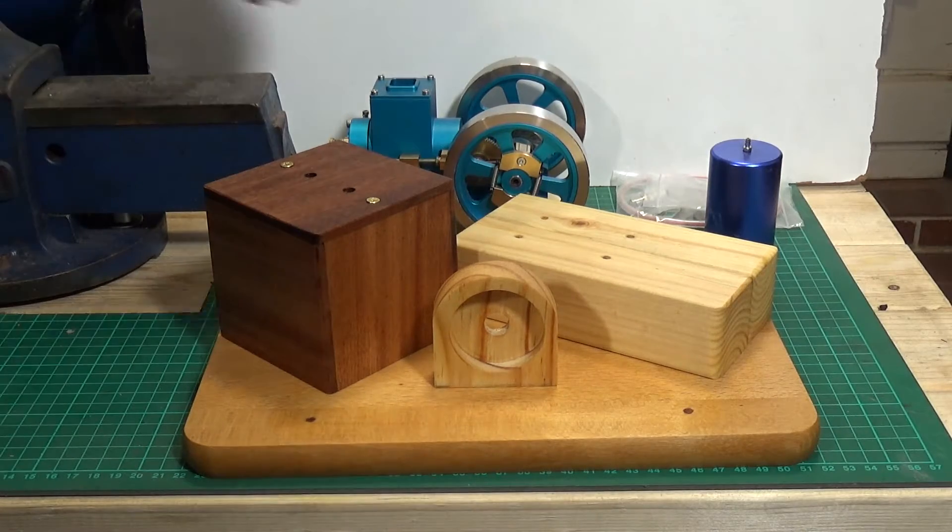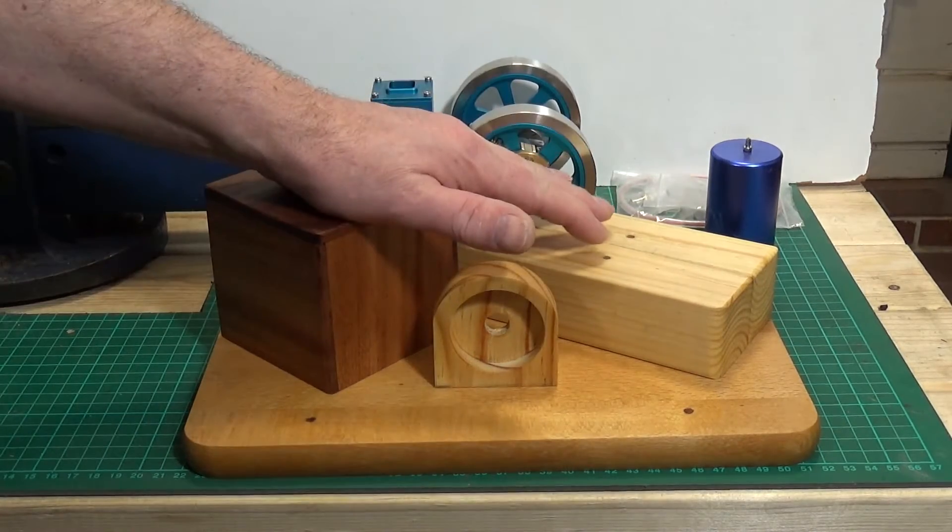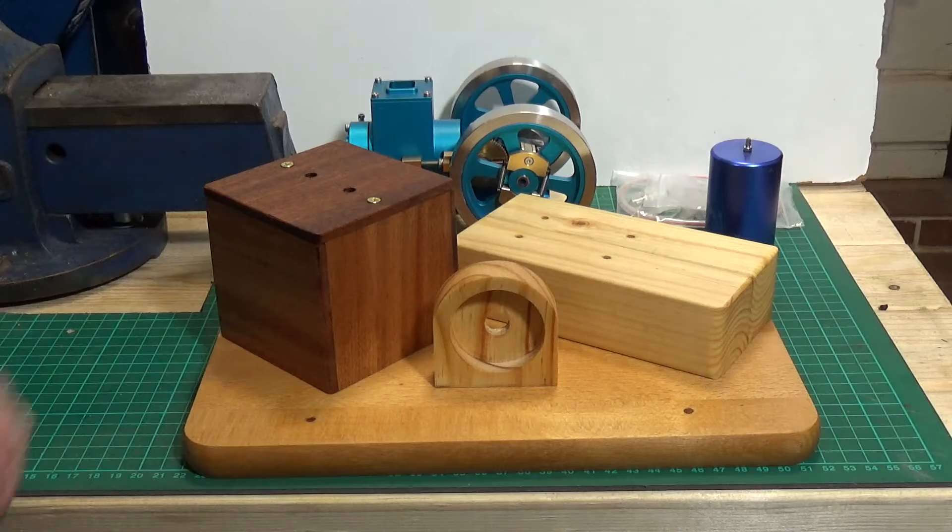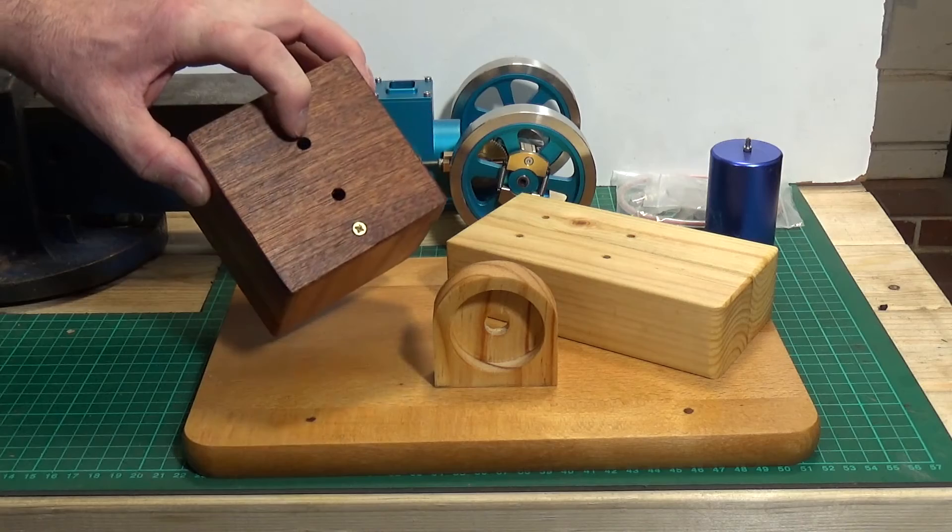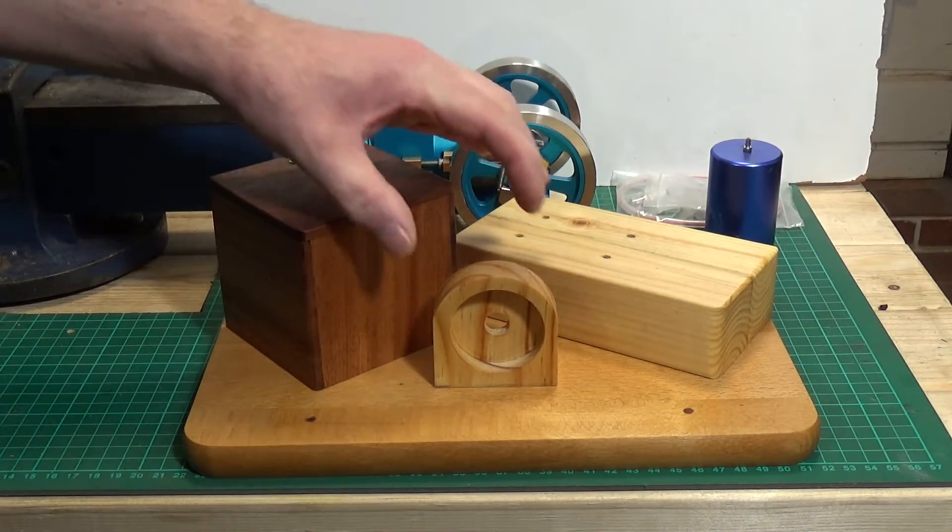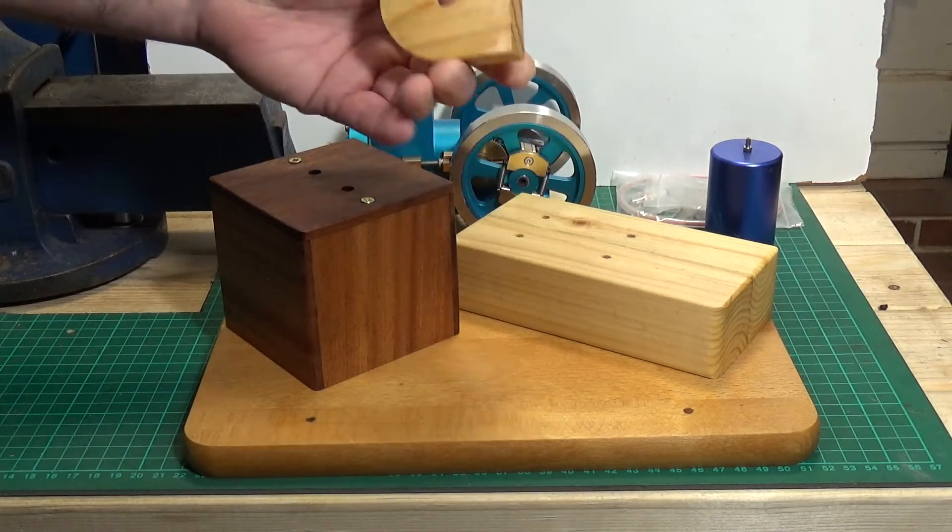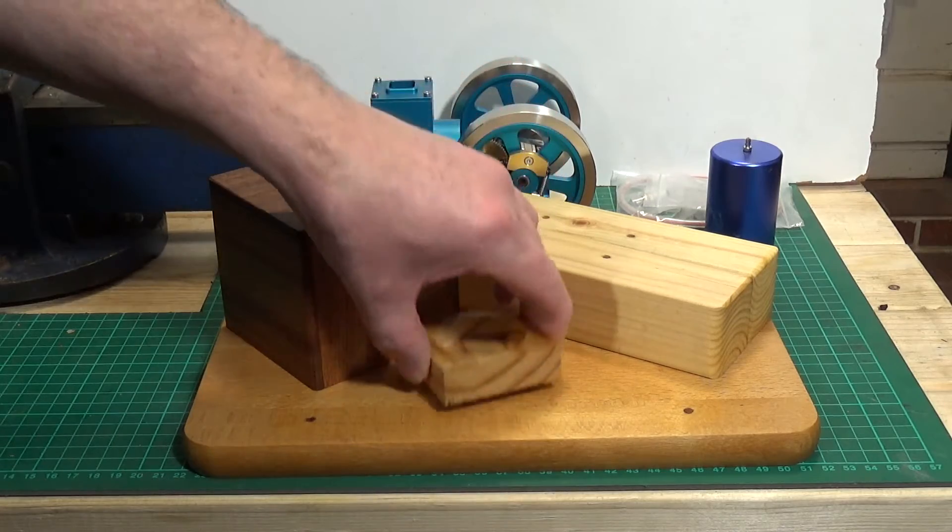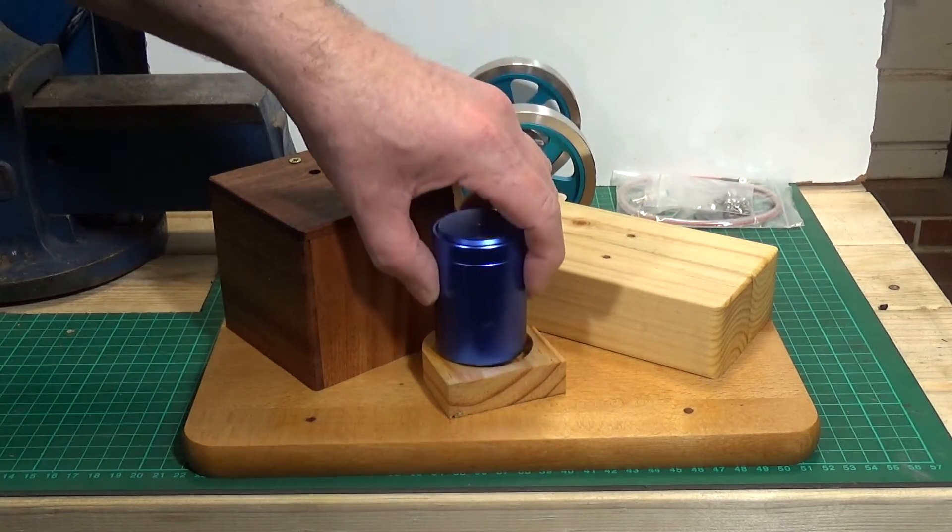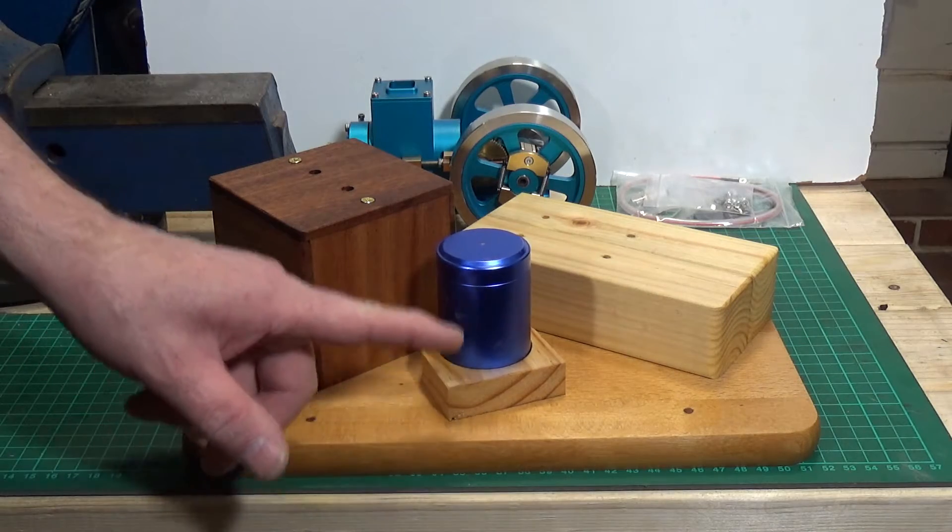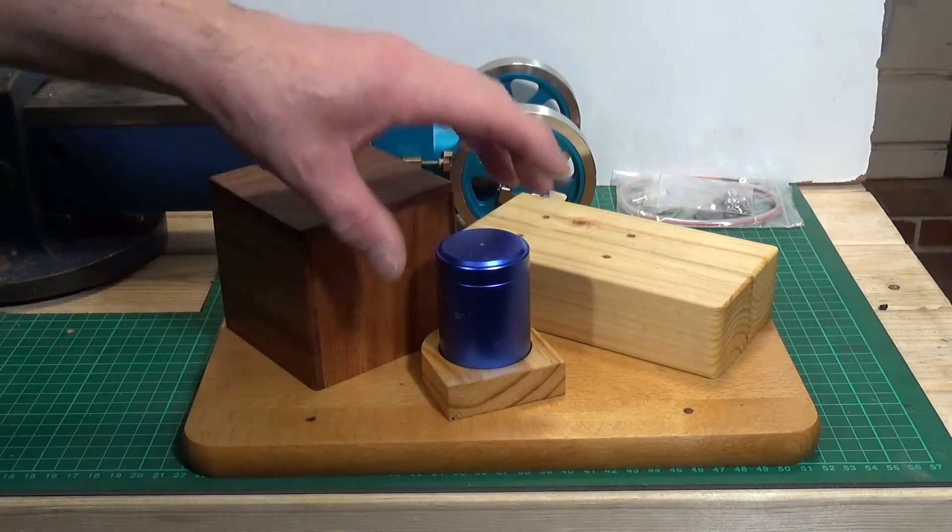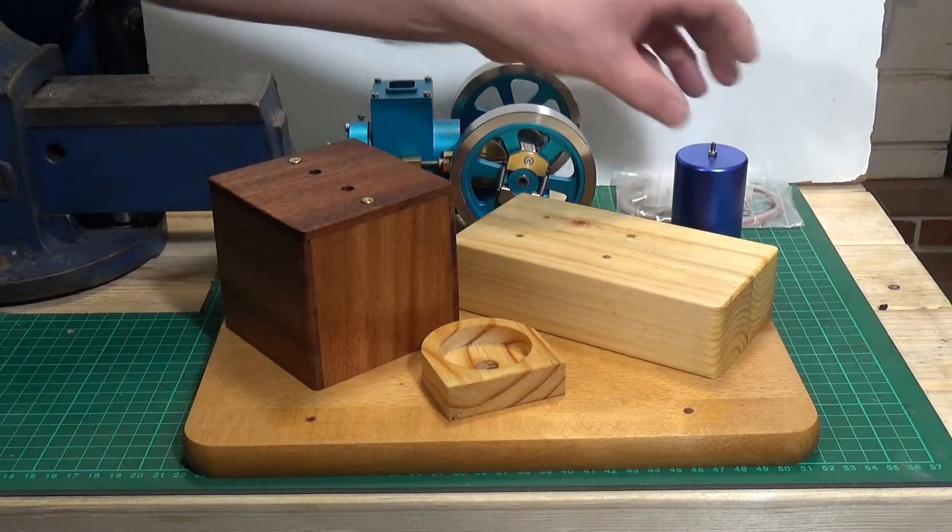Well, here we are back with the hit and miss engine. And this is the fruits of yesterday's labor. Now we have a box now to mount the electrics in. There'll be a switch and LED on the top. This is the mount I've made for the fuel tank and the fuel tank will simply go in like that. I haven't actually worked out quite how I'm going to mount this to the main base board here. But I'll do that once the rest is assembled.